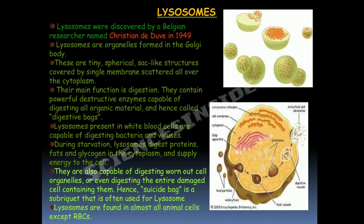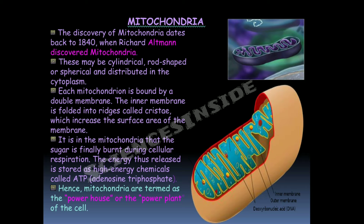The lysosomes present in WBCs are capable of digesting bacteria as well as viruses. During starvation, lysosomes digest proteins, fats, and glycogen in the cytoplasm and supply energy to the cell. They are also capable of digesting worn-out cell organelles or even the entire damaged cell — hence the name suicidal bag. They are found in almost all animal cells except RBCs.